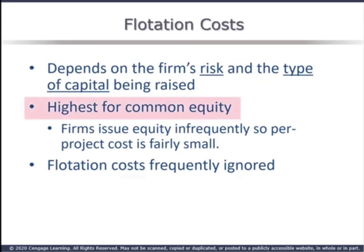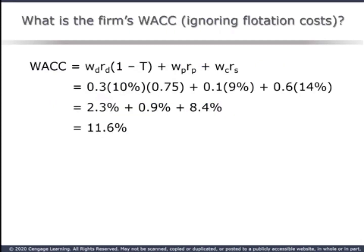Flotation cost is incorporated into the denominator of the constant growth model, reducing the price received by the issuer. The cost of new equity rises to 15.4%. Flotation costs for common equity are the highest since the asset is the riskiest; flotation costs for preferred and debt are frequently ignored since they're significantly smaller. Ignoring flotation costs and using the cost of retained earnings as the cost of equity, we substitute into the WACC equation and find a cost of capital of 11.6%.